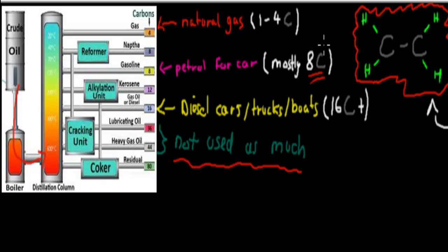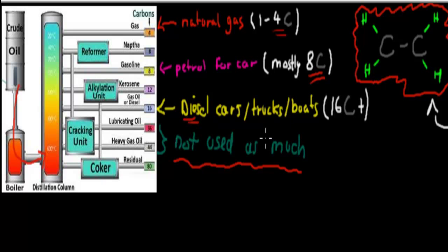The ones that we like are the ones which are petrol for the cars — the ones which have mostly eight carbons in the chain. That's called octane, and if you go to your petrol station you usually get octane into your car. Natural gas — that's your ethylene. Sometimes we also like diesel because we can use that in bigger cars and trucks. But the problem is sometimes we have way too many of those bigger ones, and what we do with the bigger ones is we can break them into smaller ones.